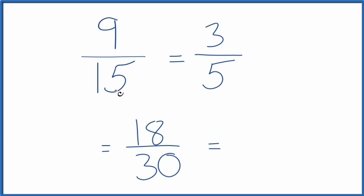We could multiply by 3, both the numerator and denominator. 9 times 3 is 27. And 15 times 3, that's 45. So that's another equivalent fraction for 9/15.